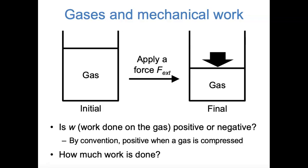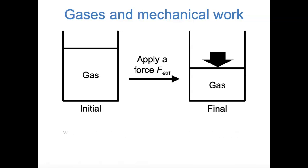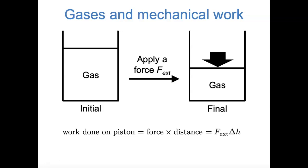Next, let's figure out how much work is actually done when this gas is compressed. As you may remember from a physics course, work is generally force times distance. So in this case, the work done on the piston is the external force times the distance it travels—F external times the change in height of the piston. The amount of work done on the gas, which is the W that we care about, is going to be the opposite of that: negative F external times the change in height of the piston.